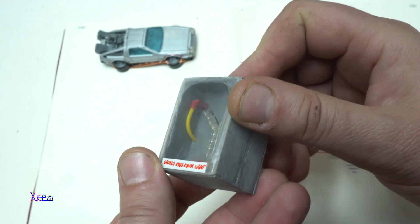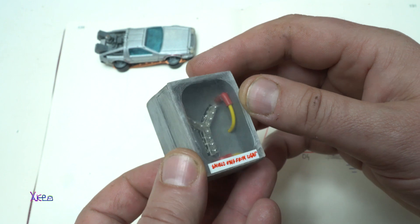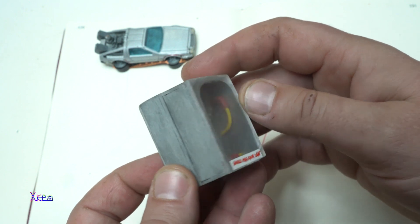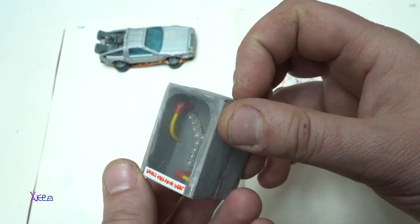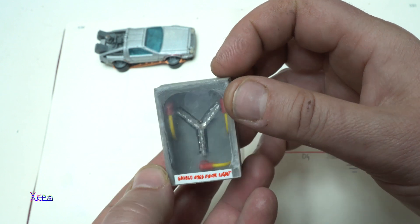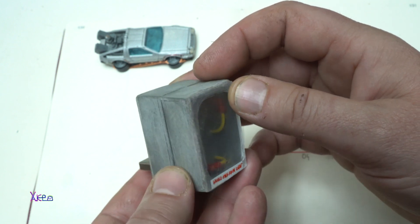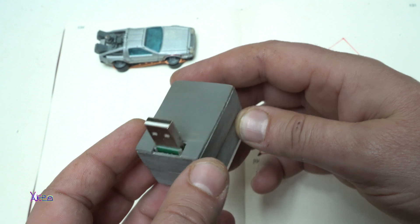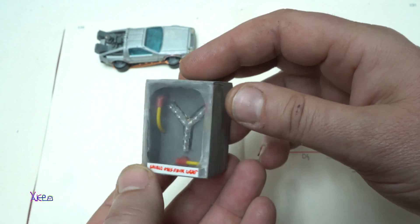So here it is. Mini version of flux capacitor from DeLorean car, Back to the Future movie. And this is a USB LED gadget.